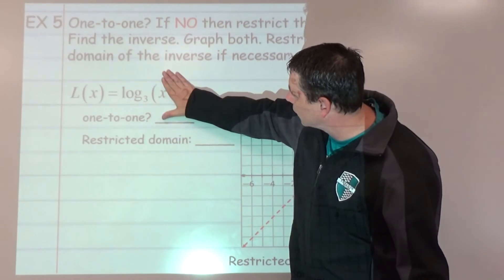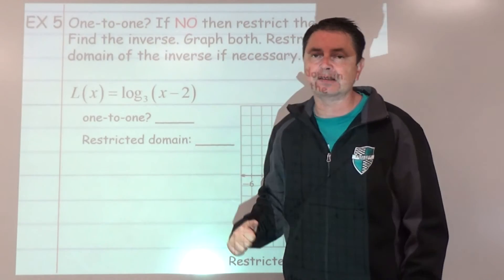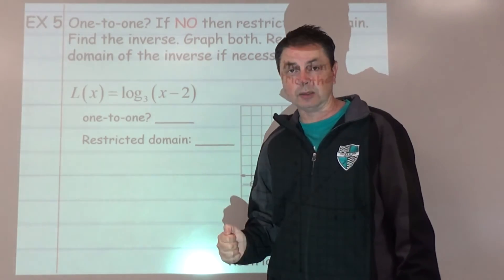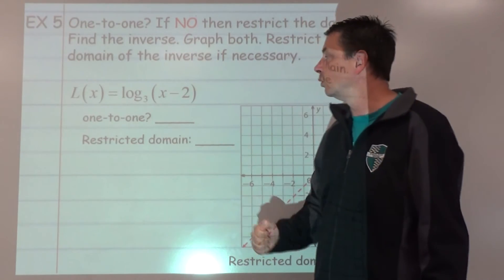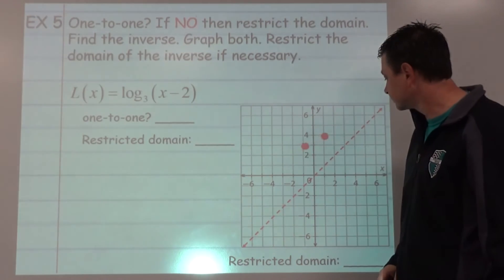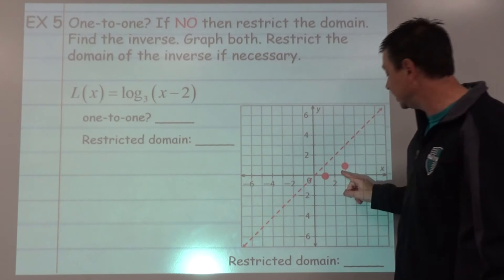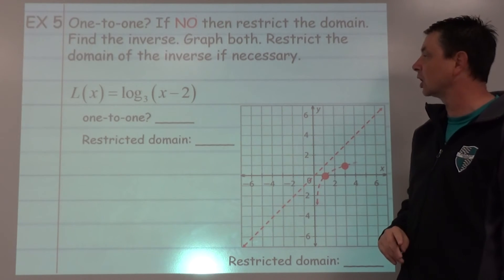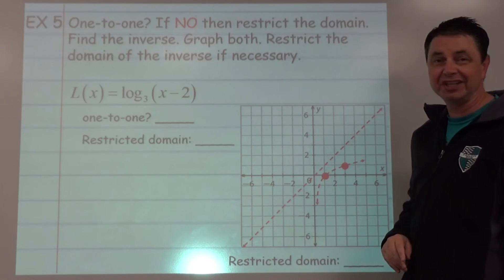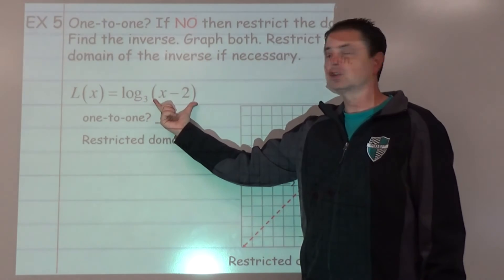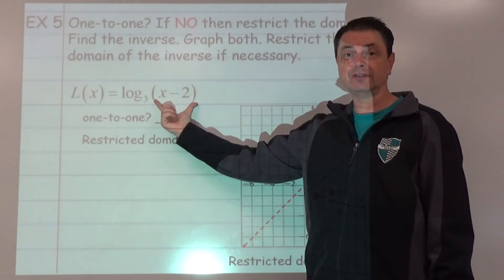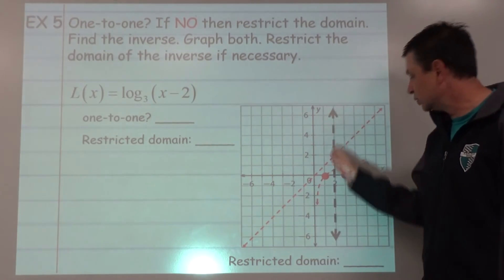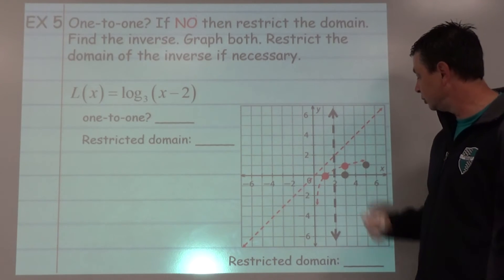We're going to start with parent function log base 3 of x. That's going to generate key points of 1 comma 0, base comma 1. So 1 comma 0. And since our base is 3, 3 comma 1 bending that way. That's our log graph. Then we're going to transform by shifting 2 to the right. That includes asymptote and key points.